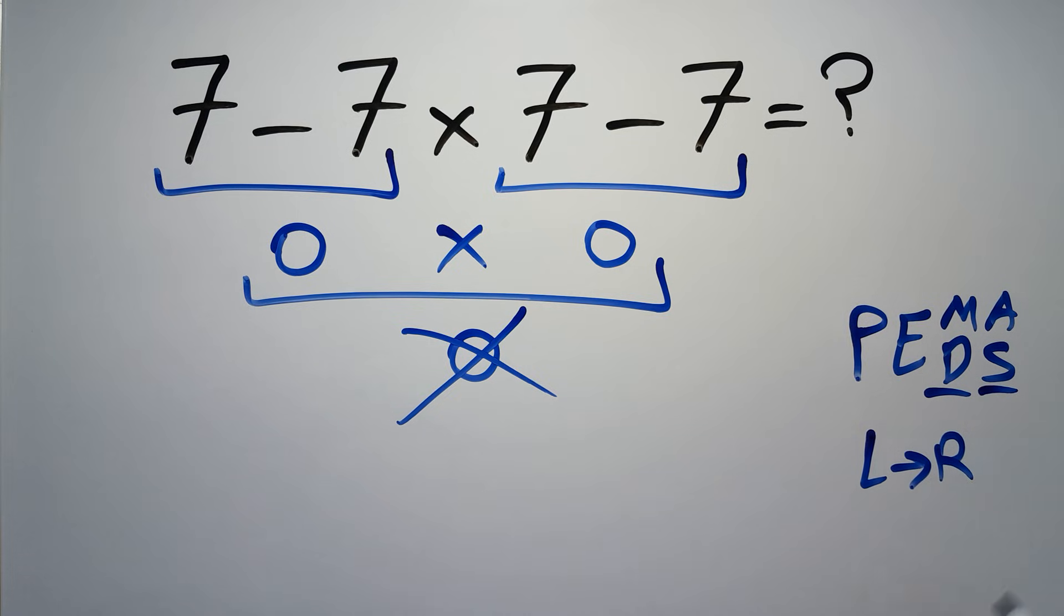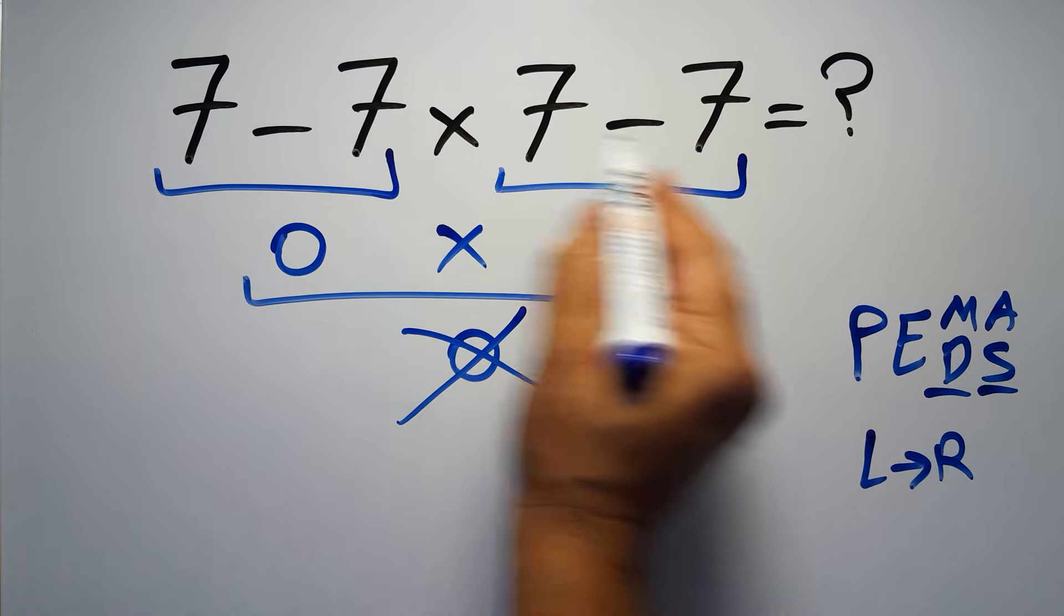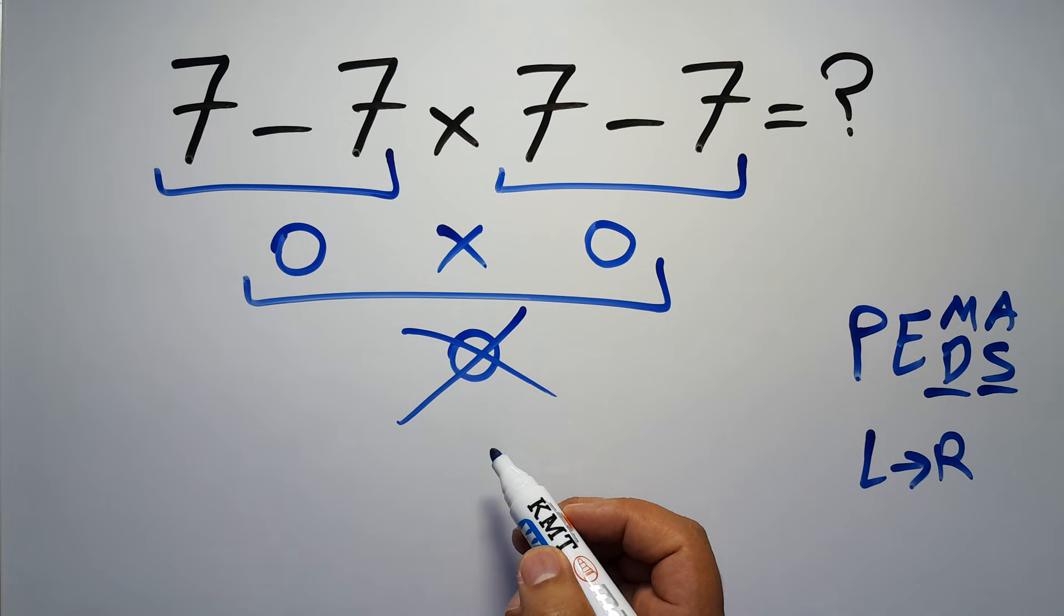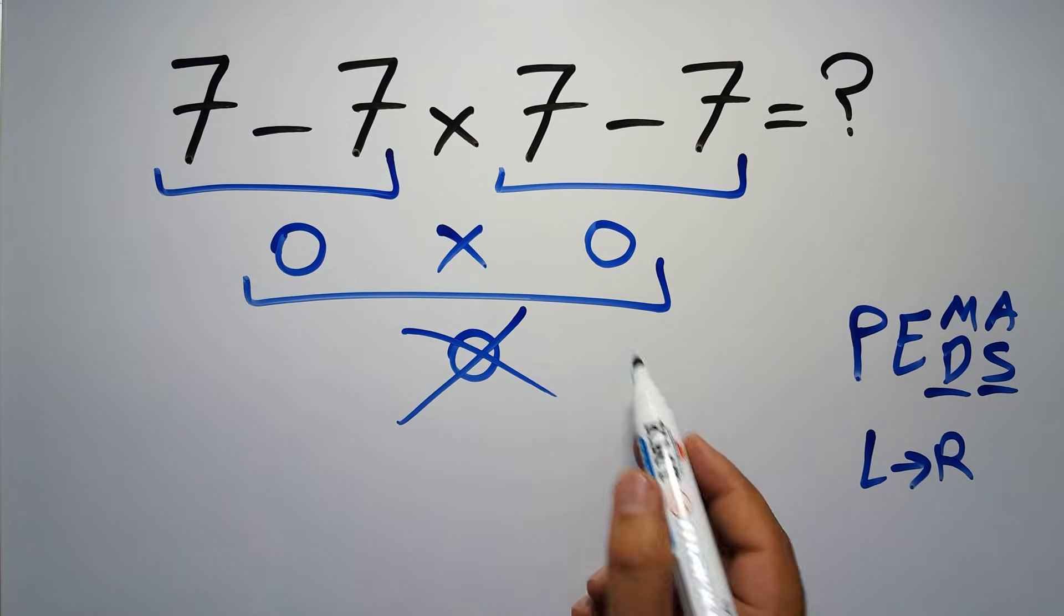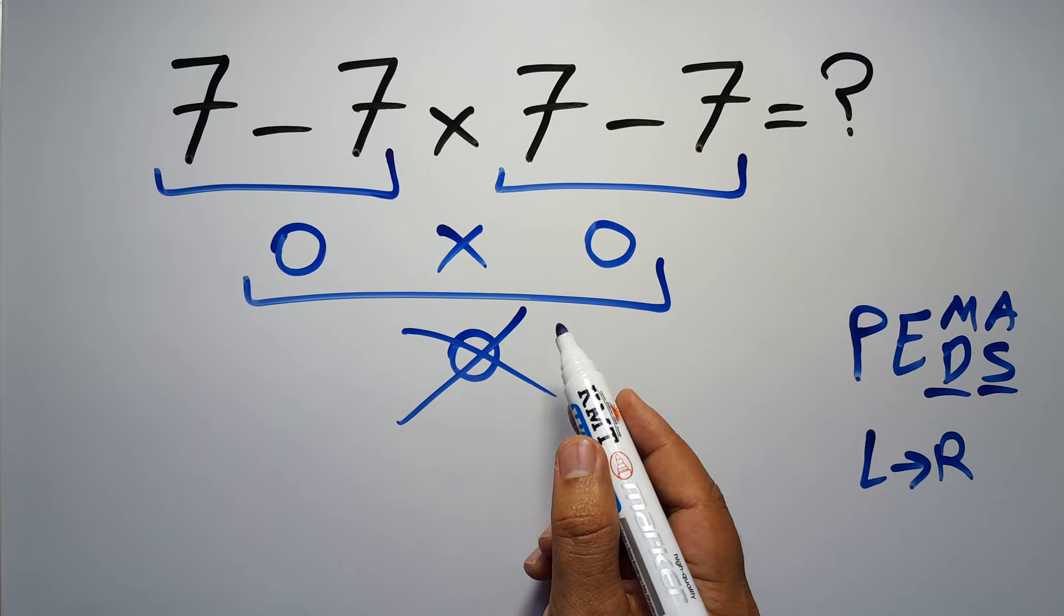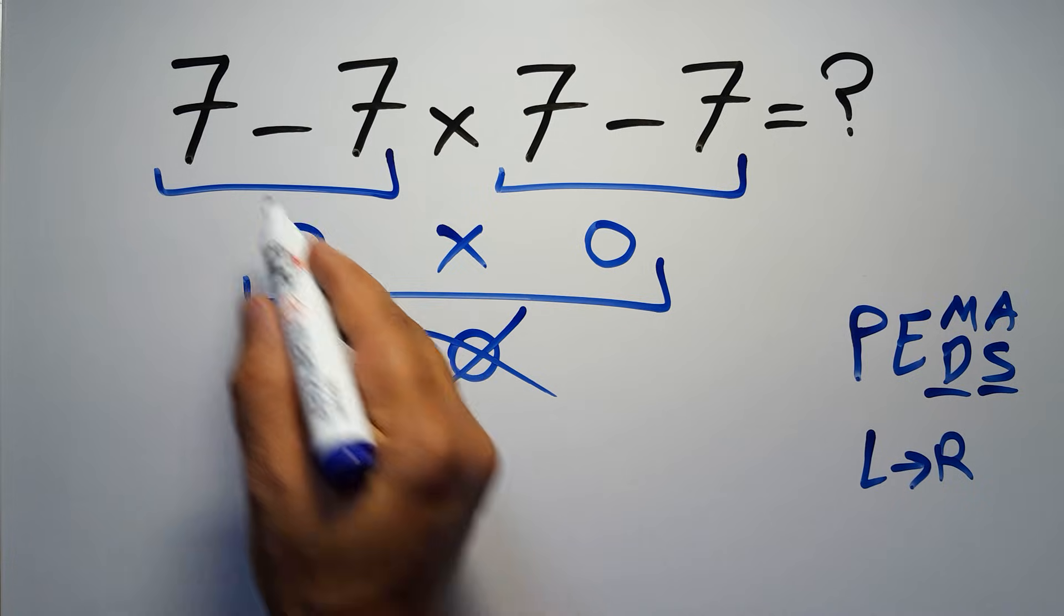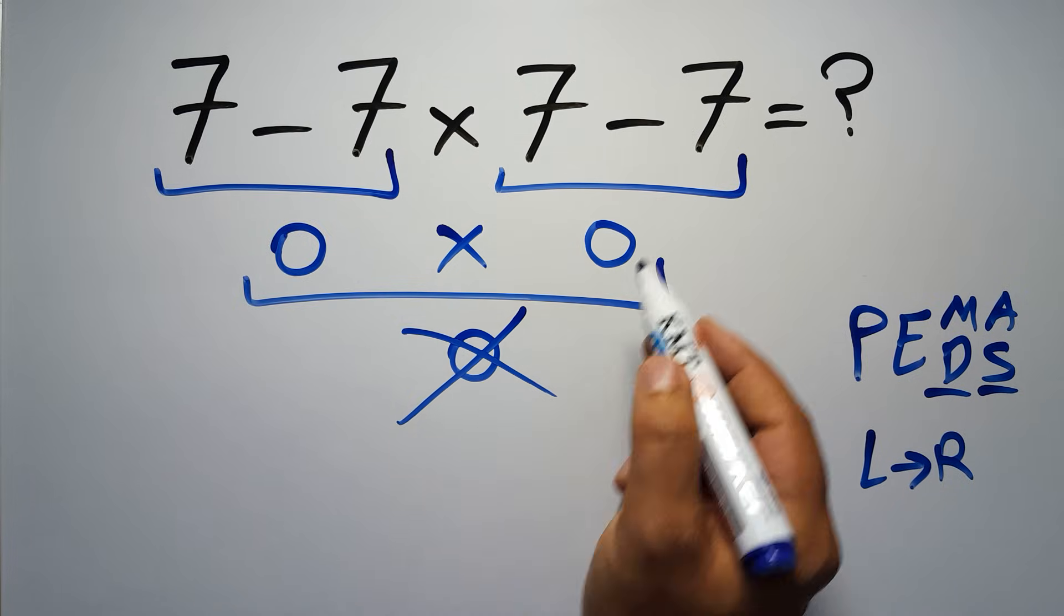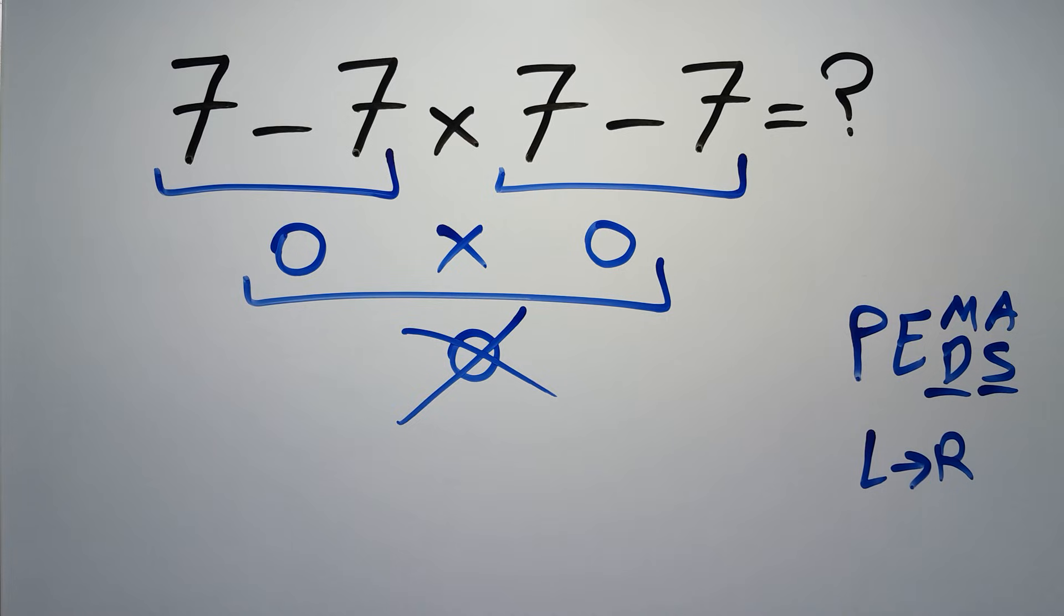In this expression we have two subtractions and one multiplication. According to PEMDAS, multiplication has higher priority than subtraction because multiplication comes before subtraction. So here first we have to do this multiplication, then this subtraction, and finally this subtraction. If we do this subtraction before this multiplication, it is wrong.